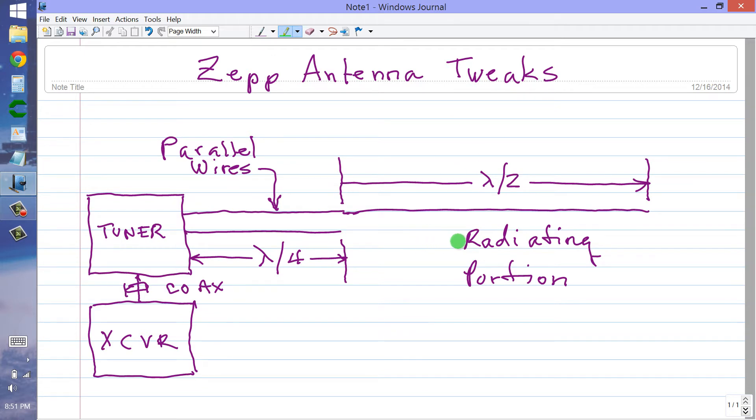This is a classical ZEP antenna, typically used at high-frequency amateur radio bands. You have your transceiver, your coaxial cable going to an antenna tuner that can produce a true balanced output, such as a PAL-STAR tuner, one quarter wavelength section of what in effect amounts to a parallel wire transmission line. That one fourth wavelength must take into account the velocity factor of the line.